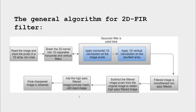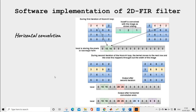The general algorithm for the 2D FIR filter: read the image and store pixels in a 1D row, perform horizontal 1D convolution followed by vertical convolution to get a slightly blurred image, subtract that from the original to obtain the high-pass filtered unsharp mask, add the unsharp mask to the original image to get the final sharpened output.